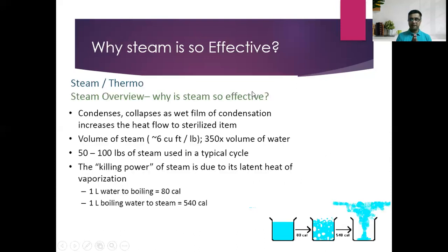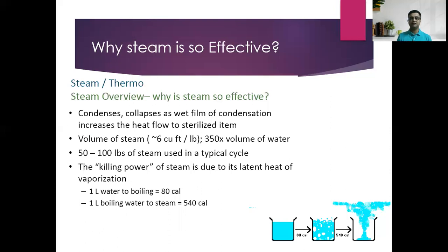So why is steam so effective? Steam condenses as a thin film of condensation, increasing heat flow to the item being sterilized. Typically 50 to 100 pounds of steam are required in a cycle. The killing power of steam is due to its latent heat of vaporization — one liter of boiling water requires 80 calories, but converting one liter of boiling water to steam requires 540 calories. This is why steam is so effective in killing; it coagulates the protein of the microorganism. Steam kills microorganisms because of its latent heat of vaporization.